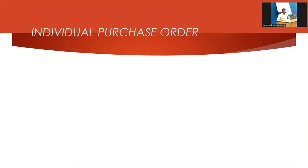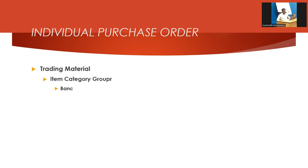They may ask you the definition and the process involved. The definition is: get the material from outside — buy the material from the vendor and sell it to the customer. It is mainly for trading material. Most companies do trading in addition to manufacturing. The item category is BANS. I'll show you in the live system itself.